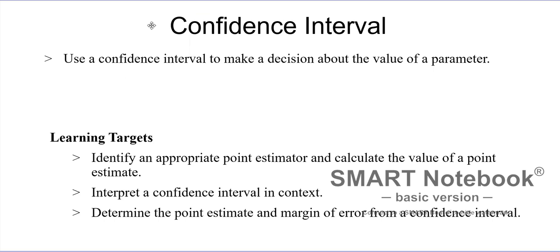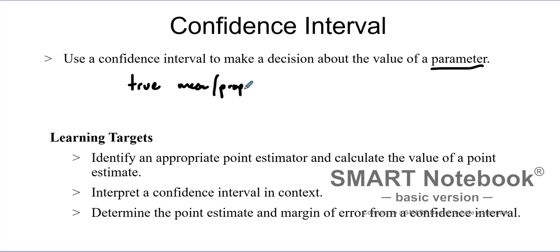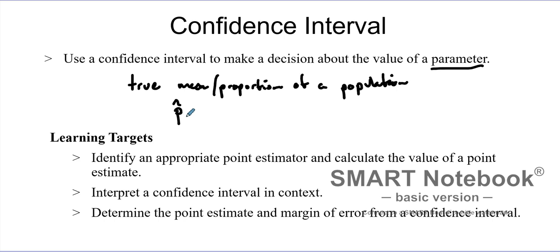We're going to talk about what's known as confidence intervals. Confidence intervals are used to make a decision about the value of a parameter. A parameter is the true mean or proportion of a population. We do sampling to try to figure out a statistic — for example, the proportion from a sample — and we want to know how close that statistic is to the true population.